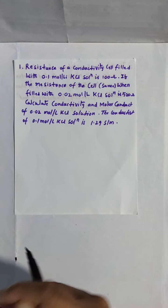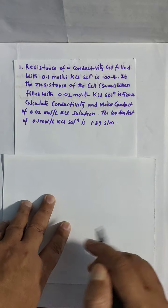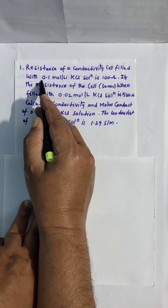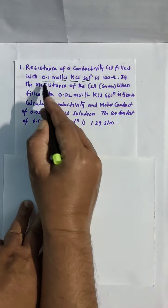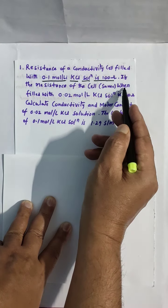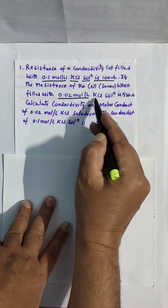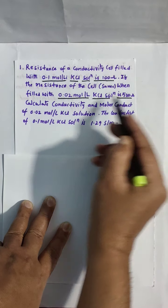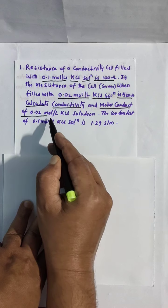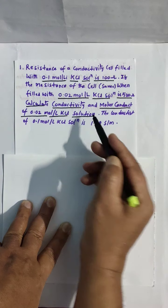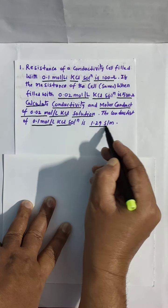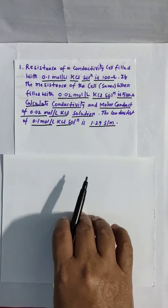Here is an NCERT question given in the textbook. Resistance of a conductivity cell filled with 0.1 mol per liter KCl solution is 100 Ohm. If the resistance of the same cell filled with 0.02 mol per liter KCl solution is 520 Ohm, calculate conductivity and molar conductivity of 0.02 mol per liter KCl solution. The conductivity of 0.1 mol per liter KCl solution is 1.29 Siemen per meter.